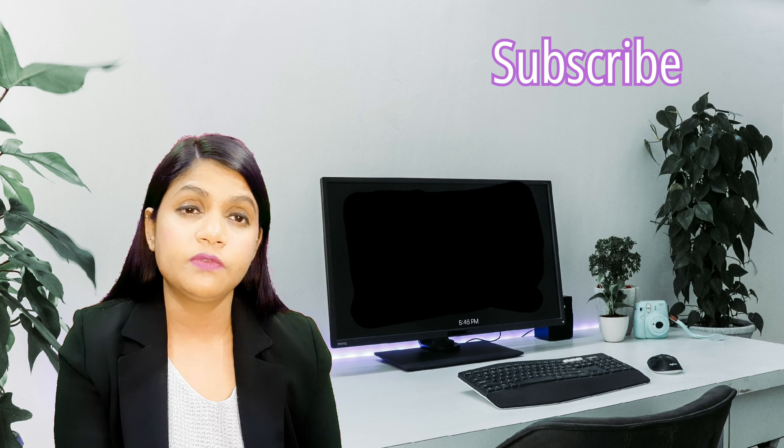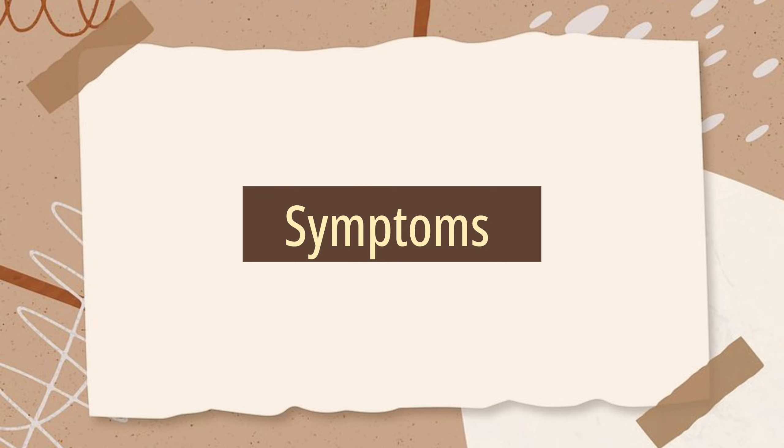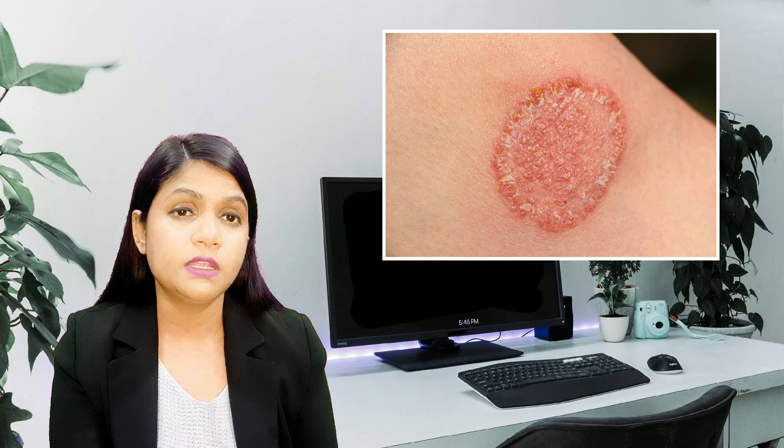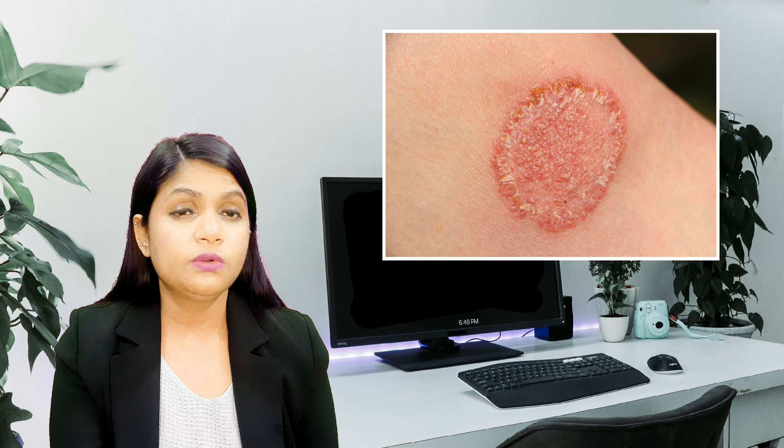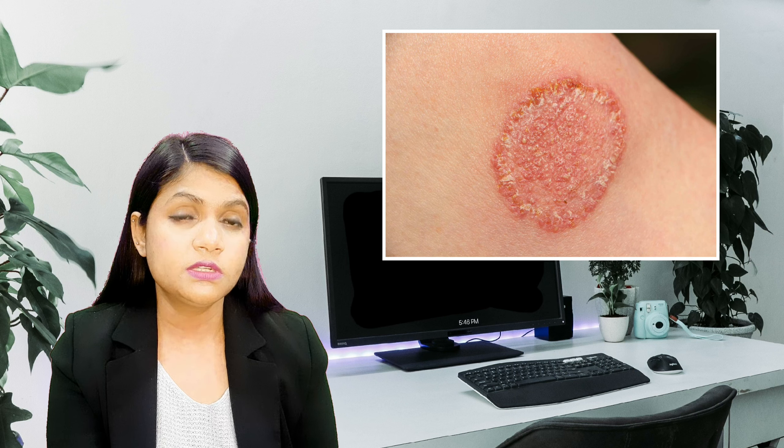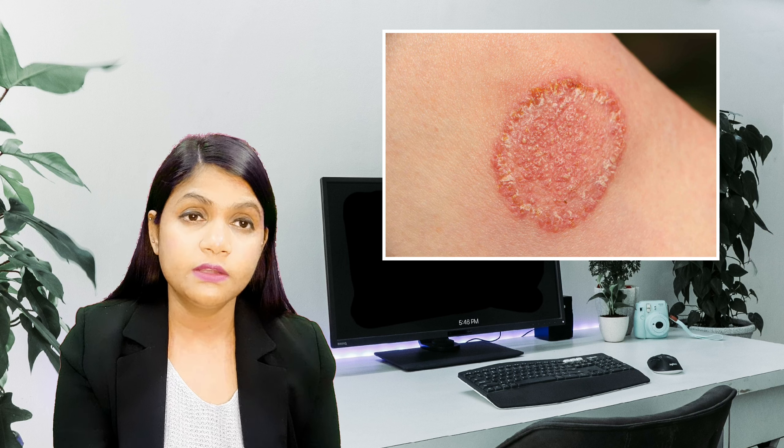Let's talk about what are the symptoms of the fungal infection. There may be circular, itchy, scaly rings that can be seen on your skin — on your groin region, on your buttock region, on your hands, even on your hair. There may be severe itching, and sometimes there may be bleeding after scratching. These types of symptoms can be seen in the fungal infection.